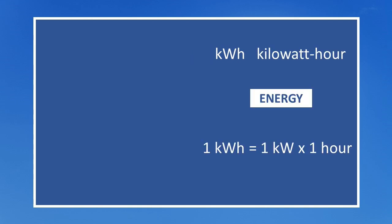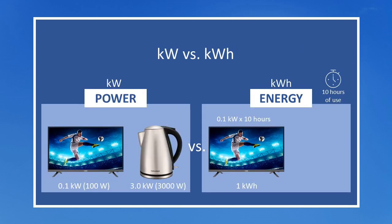Moving on to a kilowatt hour. A kilowatt hour is used to specify how much energy an electrical device uses and is the product of the power rating in kilowatts and the length of time the device is used. So the higher the power rating in kilowatts and the longer it is used, the more electrical energy is consumed — i.e. kilowatt hours. Taking our earlier example, if you sat and watched your big screen LED TV for 10 hours then you would consume 1 kilowatt hour of energy — that's 10 hours at 0.1 kilowatts.